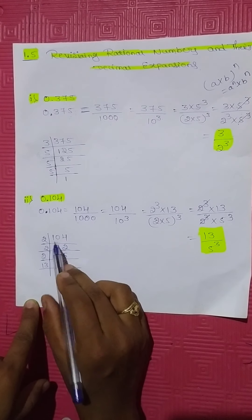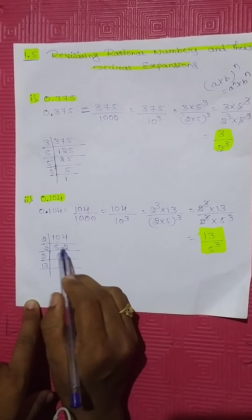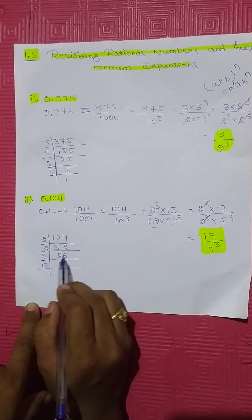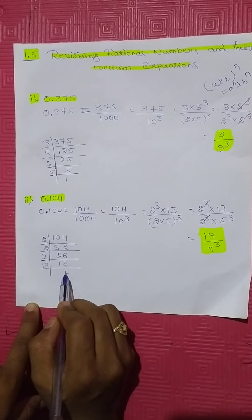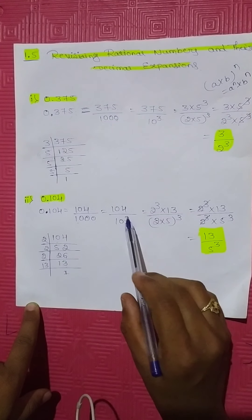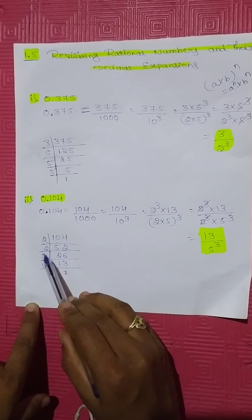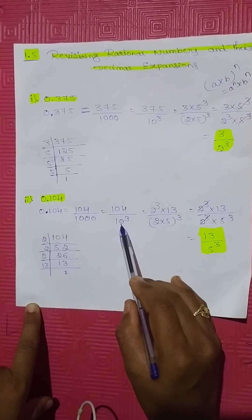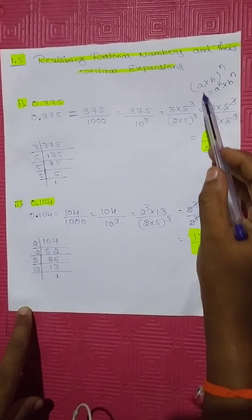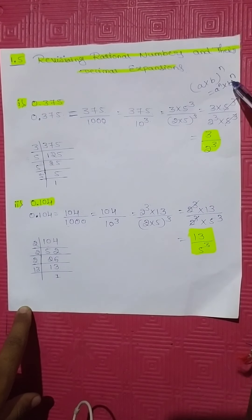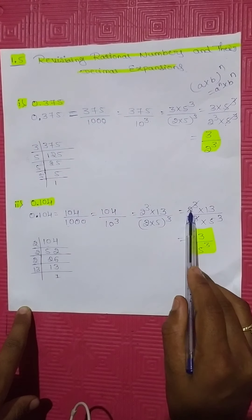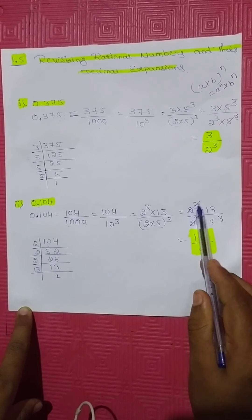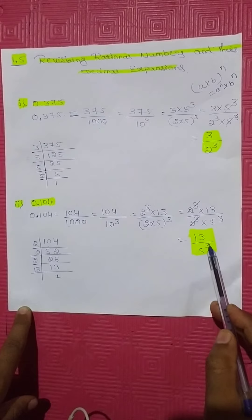104 can be expressed as prime factors: 2 three times repeated into 13, written as 2 to the power of 3 into 13. Using the identity A×B to the power of N equals A to the power of N into B to the power of N, we get 2 to the power of 3 into 13, divided by 2 to the power of 3 into 5 to the power of 3. The 2 to the power of 3 terms cancel, leaving 13 divided by 5 to the power of 3.